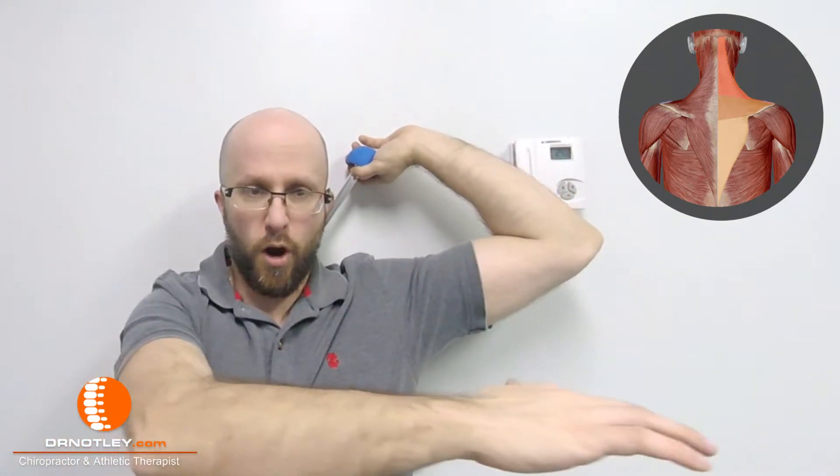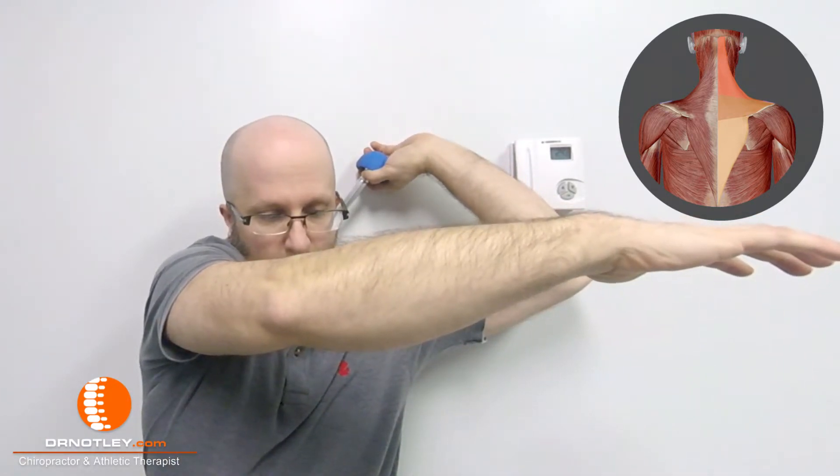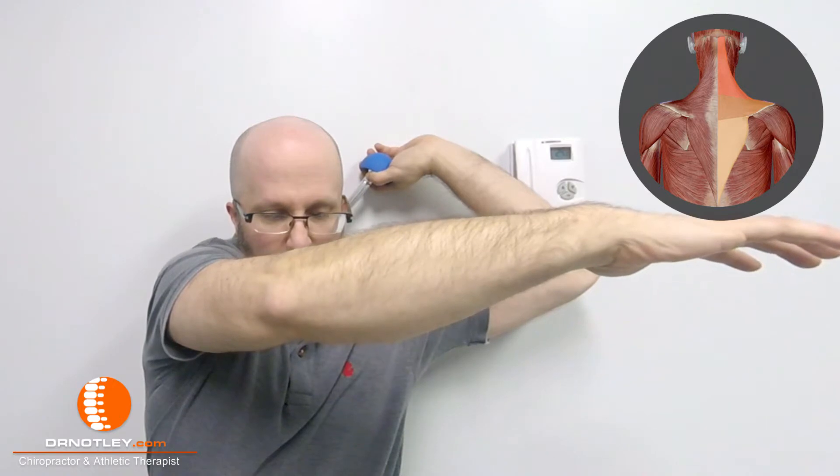Once we have that spot, we can do a few things. We can shrug our shoulder up and get a little stretch there. We can reach across, we might get a stretch there, or if we do a combination of the two and stretch, we can get into that area and maybe get some release out of it. It's a much tougher one to get with this method, but it's worth a try.